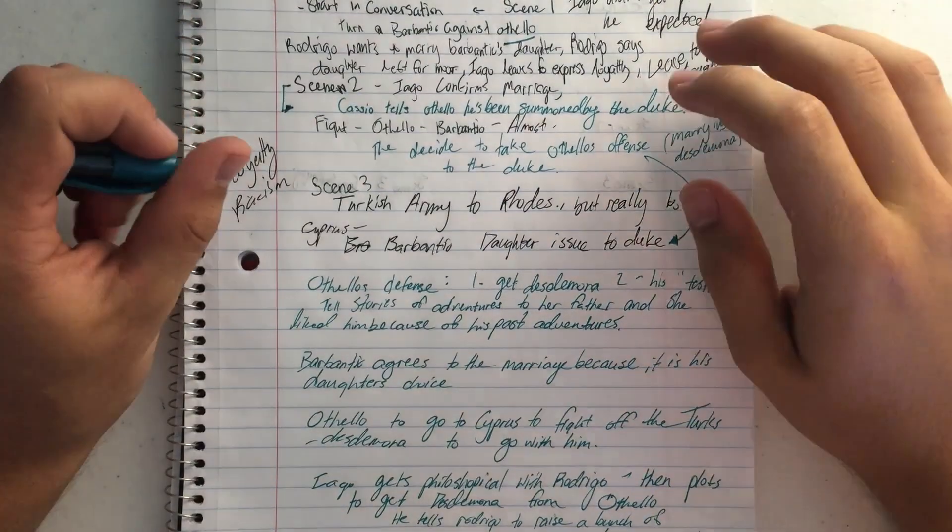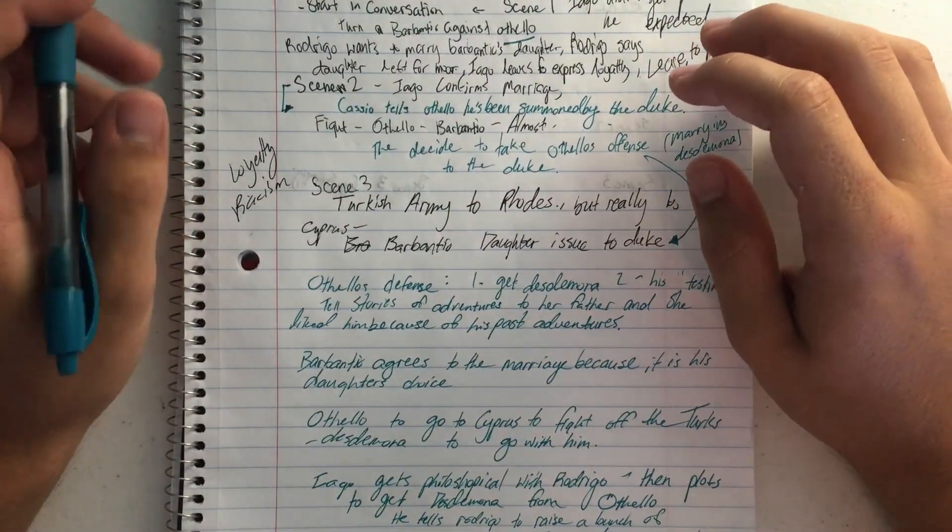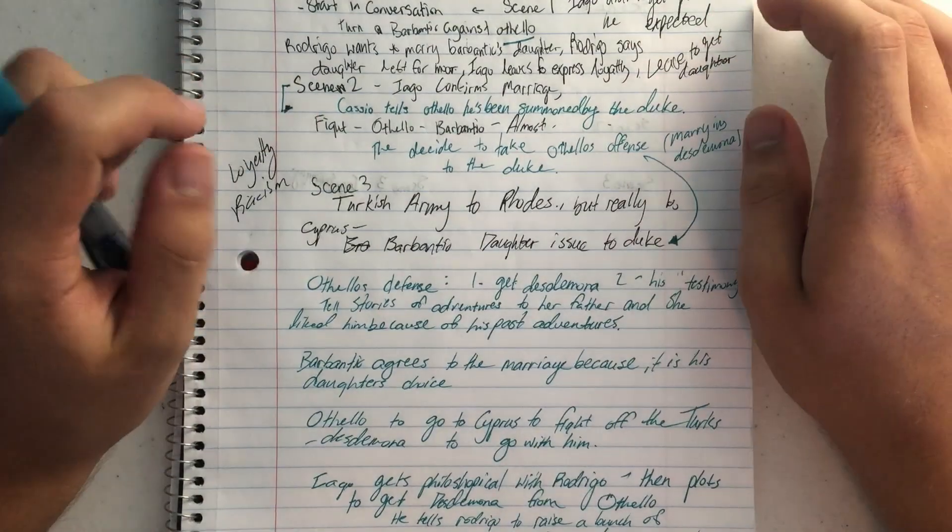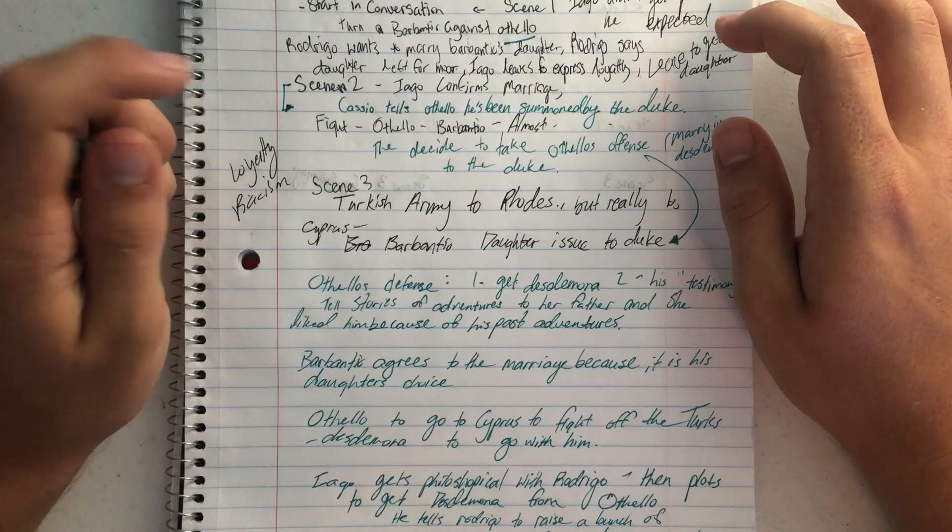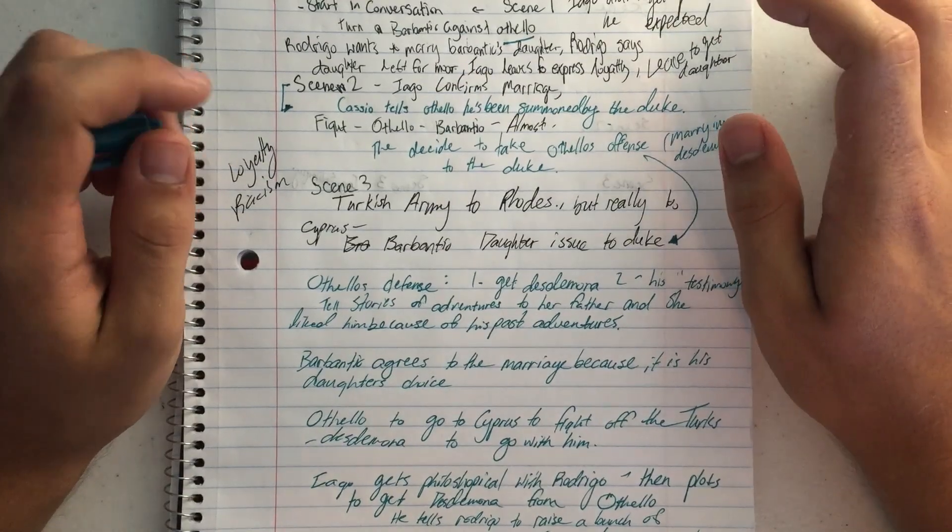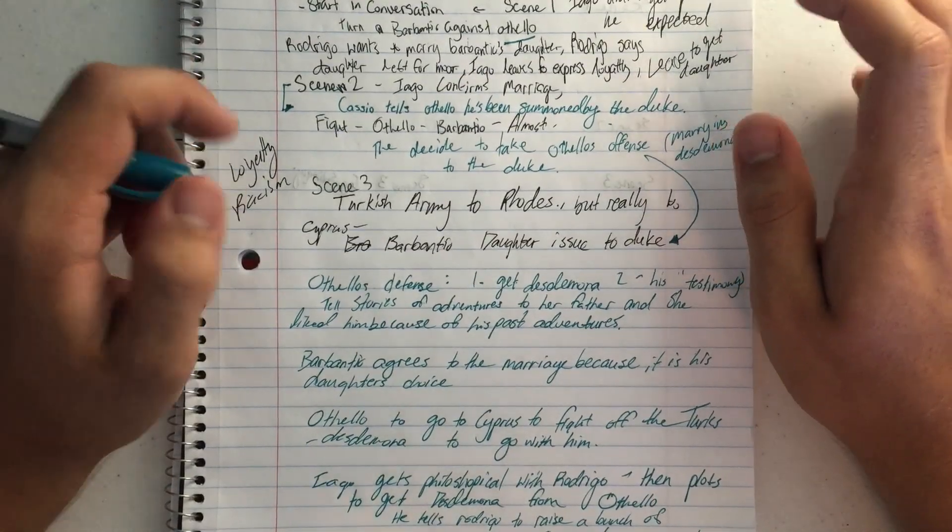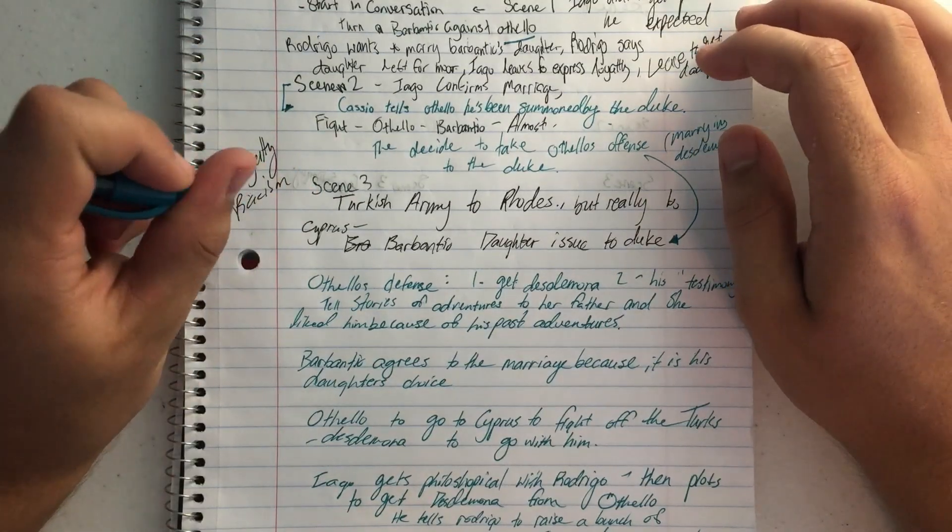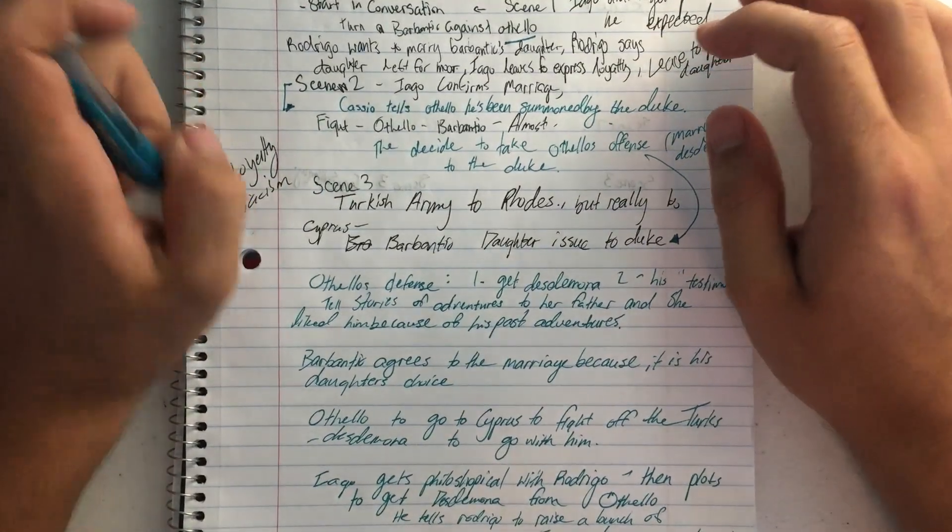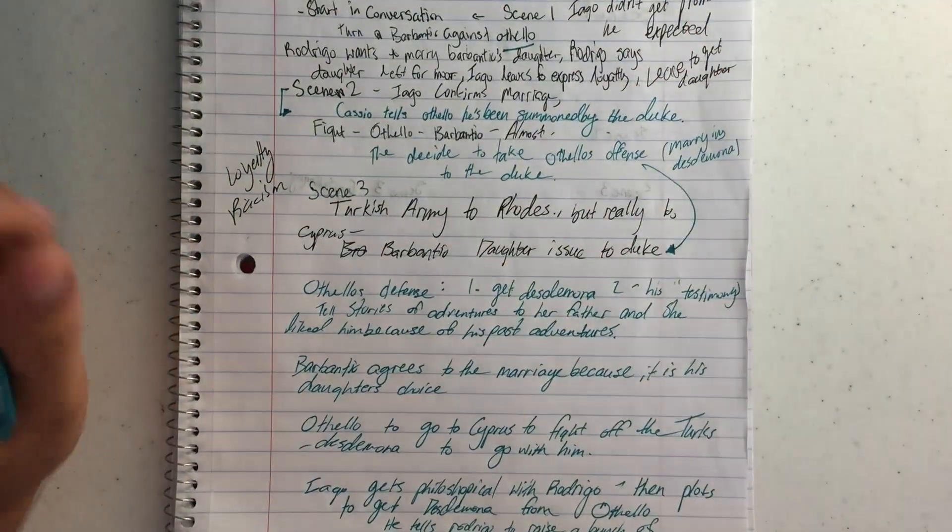So when they go to see Othello, Cassio comes and tells Othello that the Duke wants to see him. And then Brabantio shows up with Rodrigo to attack Othello. Othello's like, hey, what are you guys doing? He's like, I'm upset because you took my wife. And they're like, let's go talk to the Duke and let the Duke decide.